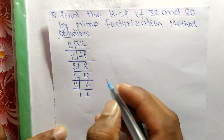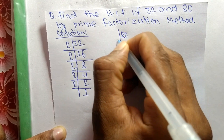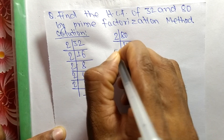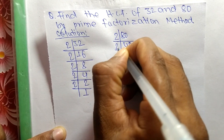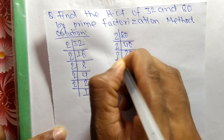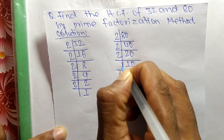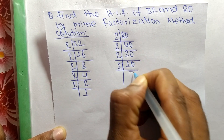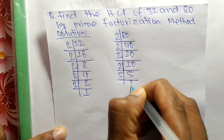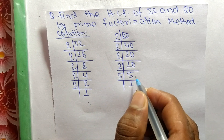Likewise, the prime factors of 80 are: 2 times 40 equals 80, 2 times 20 equals 40, 2 times 10 equals 20, 2 times 5 equals 10, and 5 times 1 equals 5.